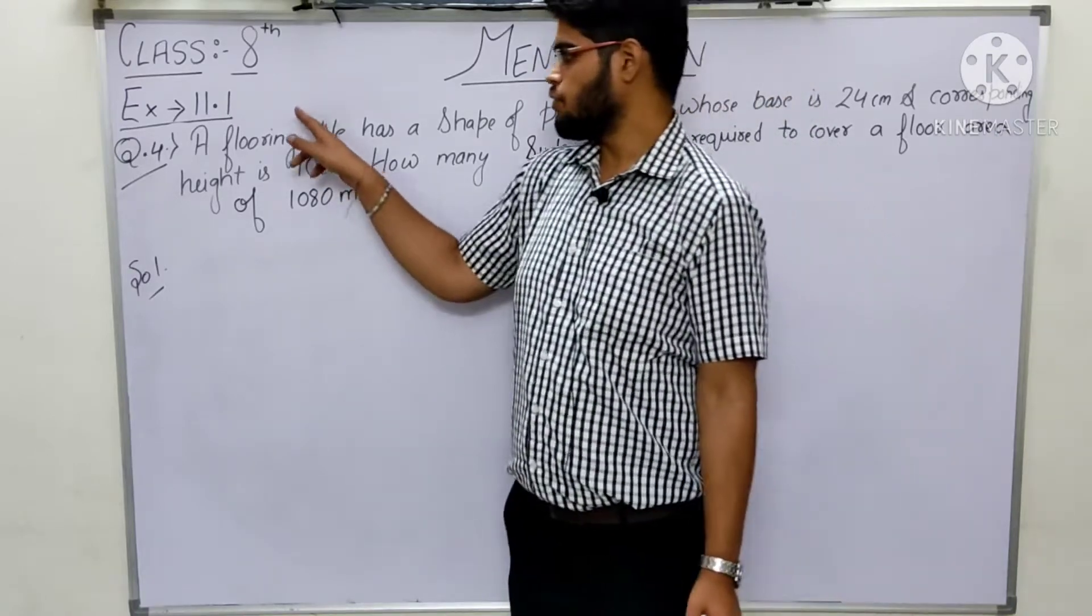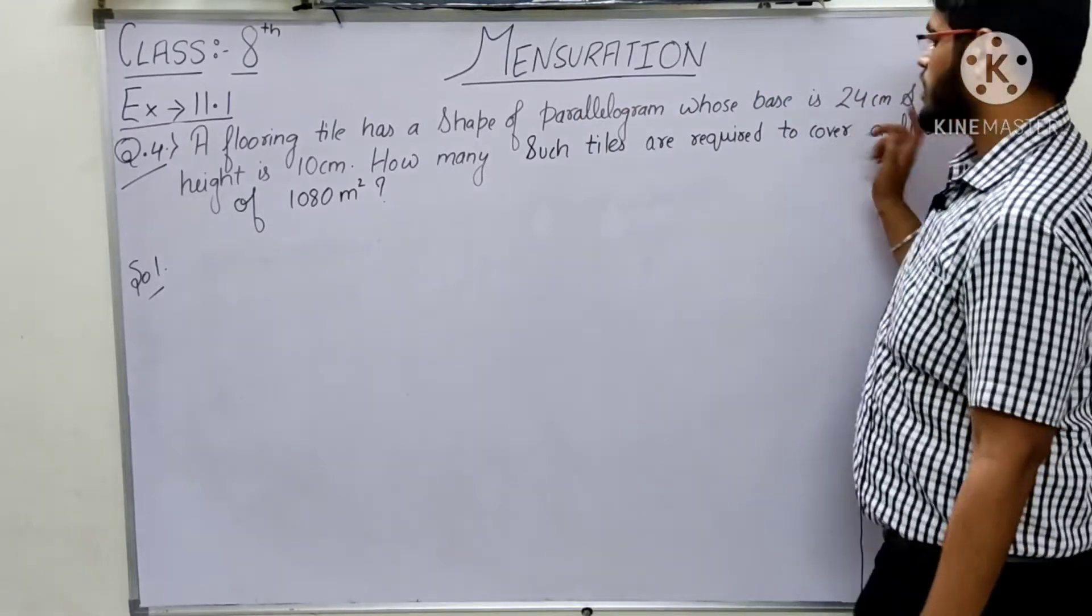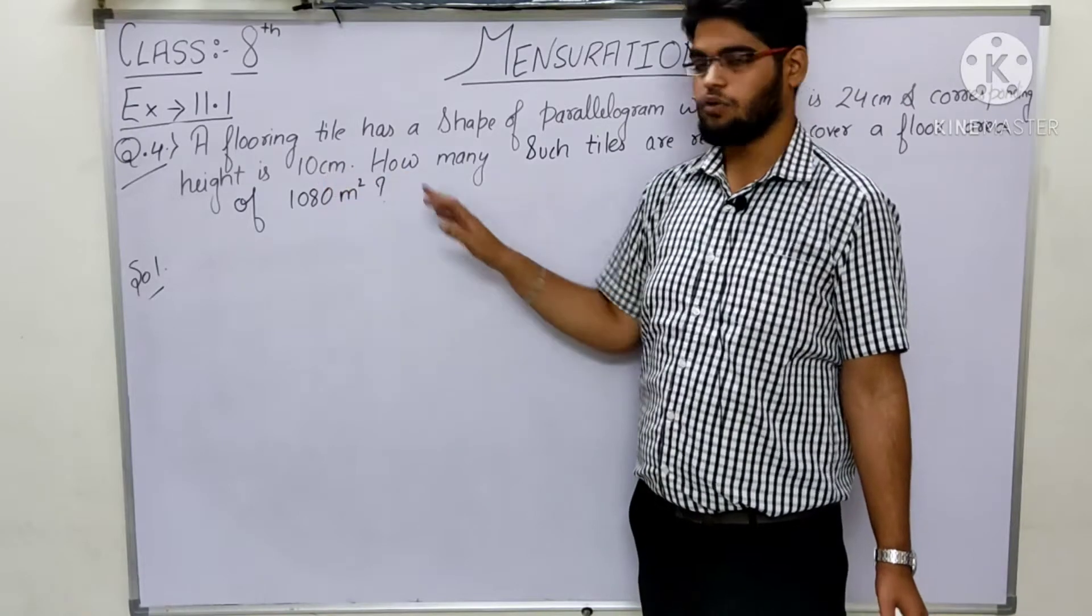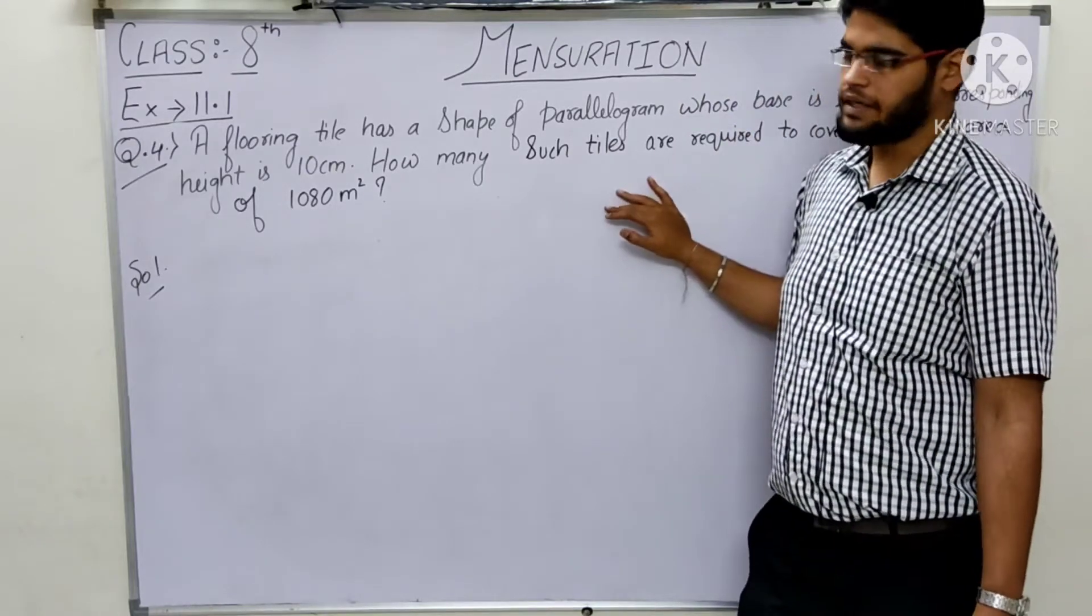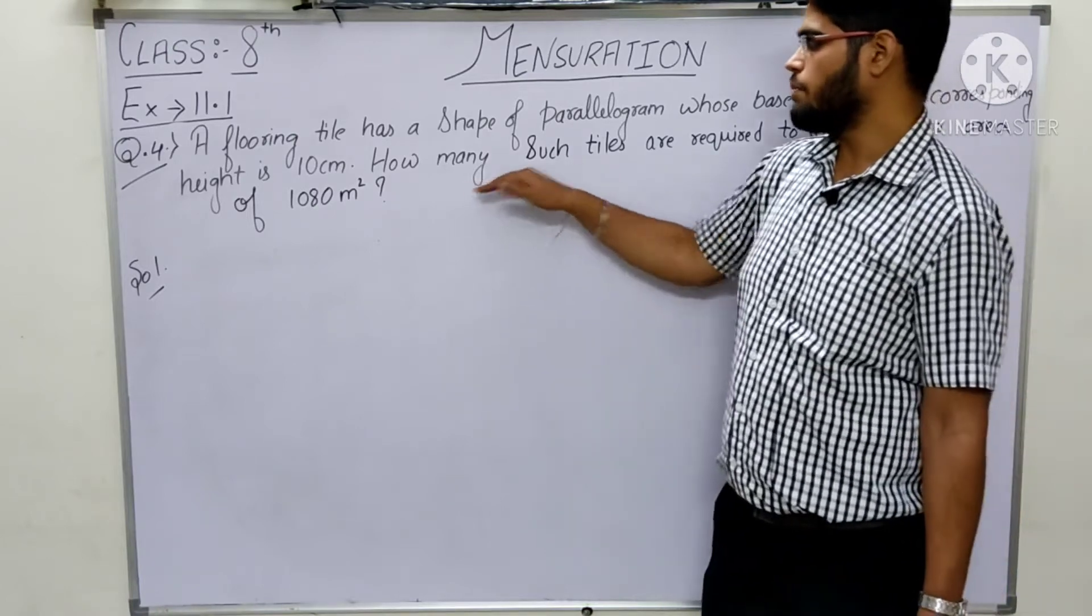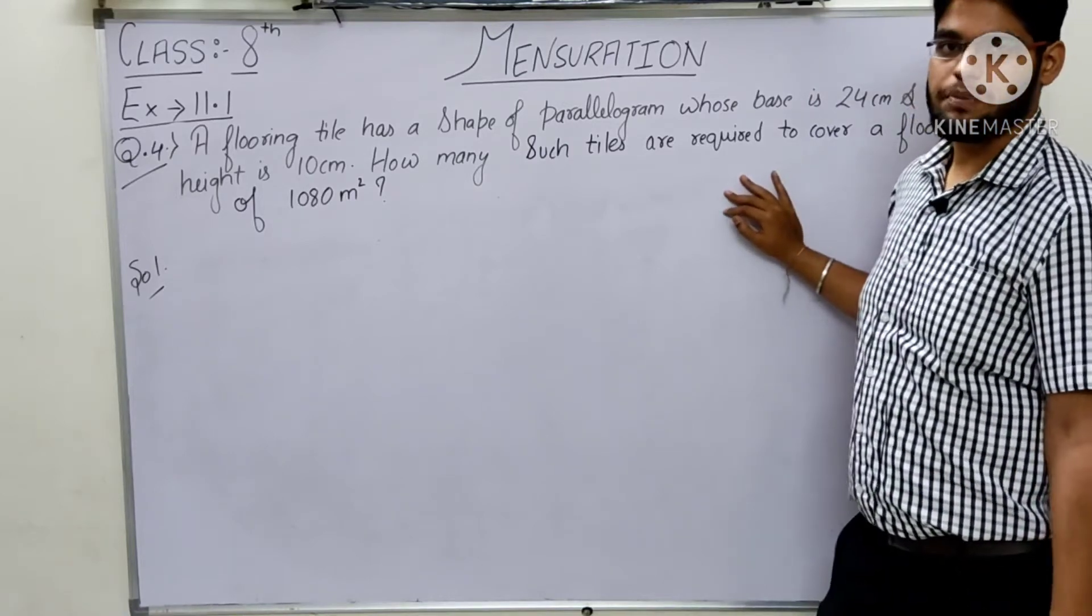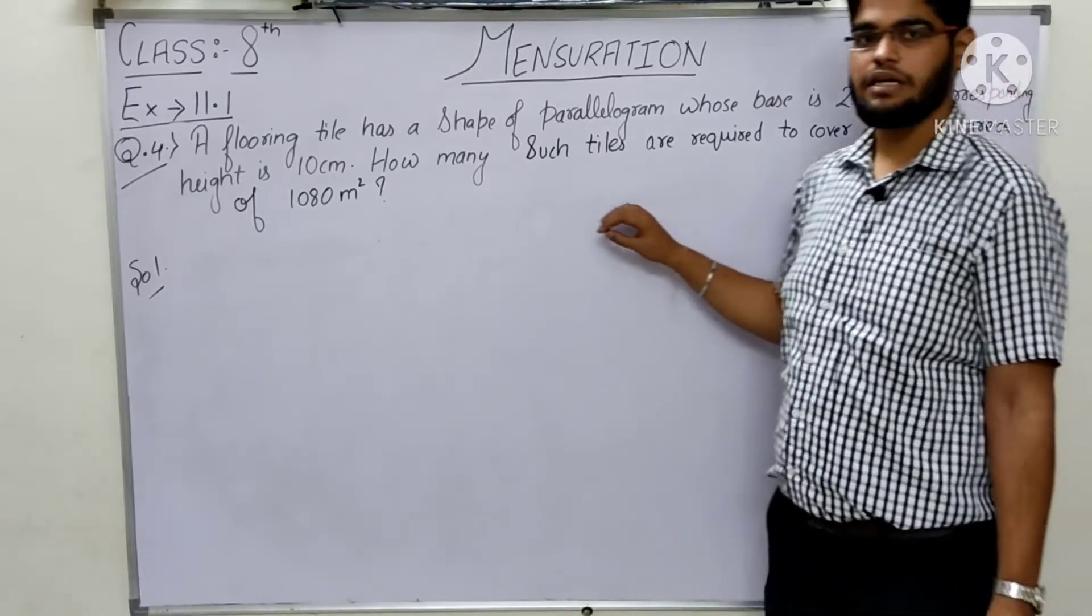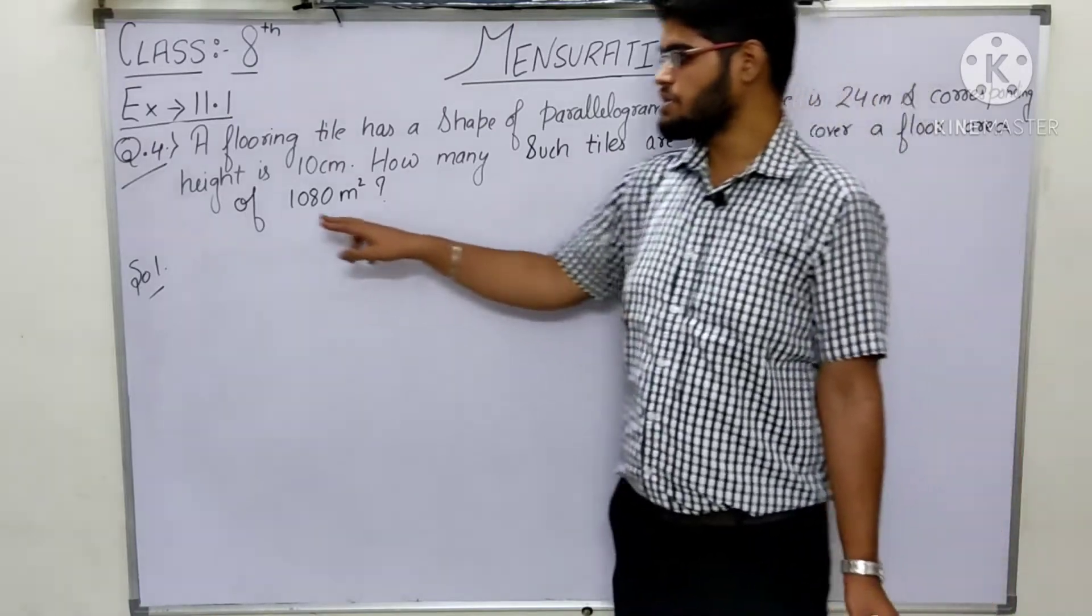Now question number 4: A flooring tile has a shape of parallelogram whose base is 24 cm and corresponding height is 10 cm. How many such tiles are required to cover a floor area of 1080 m²?